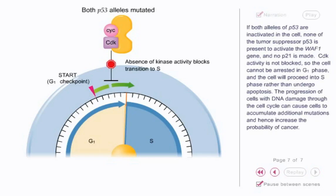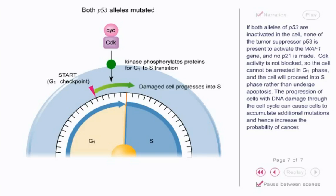If both alleles of p53 are inactivated in the cell, none of the tumor suppressor p53 is present to activate the WAF1 gene, and no p21 is made. CDK activity is not blocked, so the cell cannot be arrested in G1 phase, and the cell will proceed into S phase rather than undergo apoptosis. The progression of cells with DNA damage through the cell cycle can cause cells to accumulate additional mutations, and hence increase the probability of cancer.